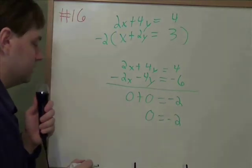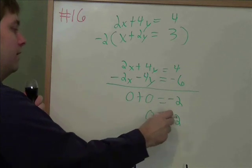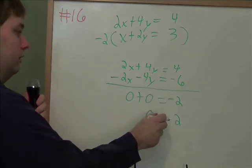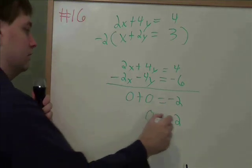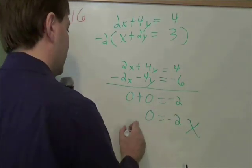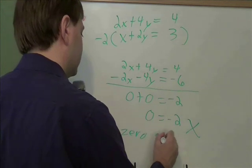And now how many solutions does this have? How many different letter y's are going to make this true? None. No matter what y is, 0 does not equal negative 2. That's just a fact of math. That never happens. That means there are 0 solutions.